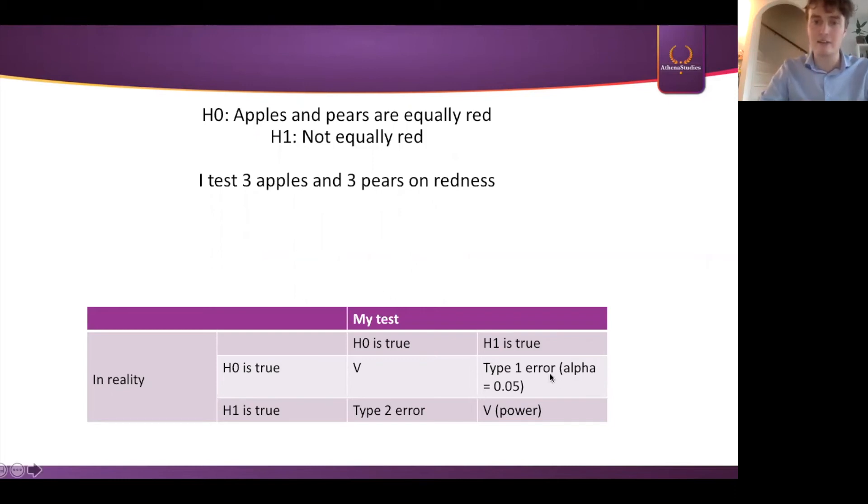And a little bit of background information on the alpha. Well basically, scientists are not stupid. So if I tell my supervisor that I'm going to test three apples and three pears, then he or she is already going to know, okay, there is a chance that we come to a wrong conclusion because we can't test all. And now we have to establish how careful do we want our test to be? And most of the times they put it on 0.05.